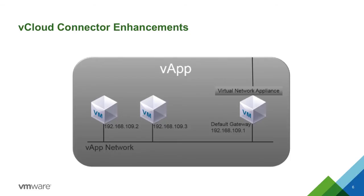Configure the IP, NAT, and firewall rules once and copy the entire vApp into vCloud Air. A vApp may contain a network virtual appliance that the virtual machines use within the vApp. In this example, all the virtual machines use the default gateway 192.168.109.1. The internal interface of the network appliance should have the IP address and MAC address preserved to minimize the impact on the virtual machines that are connected to it.